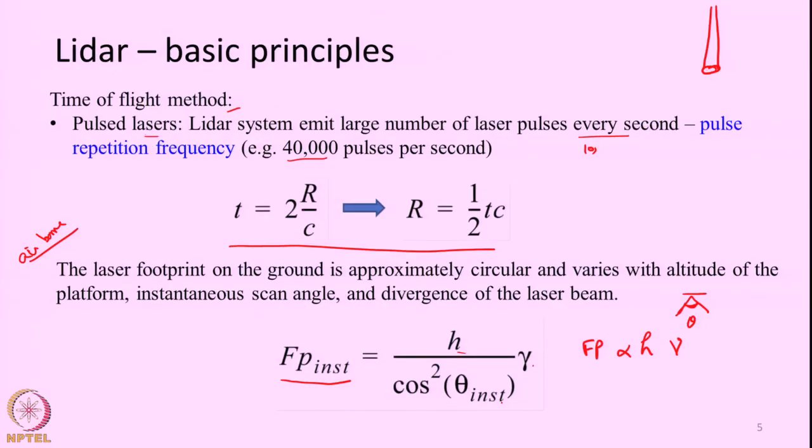If the aircraft has a scanning mechanism, as the scan moves away from nadir, the circular footprint becomes slightly elliptical and the footprint size increases. To account for this change we use the cos²(θ_inst) term, where θ_inst is the instantaneous scan angle at the particular instant at which the range r is measured. There can be many different theta instances — each location in the scan position will have one θ_inst — and by accounting for this we can correctly measure the footprint.